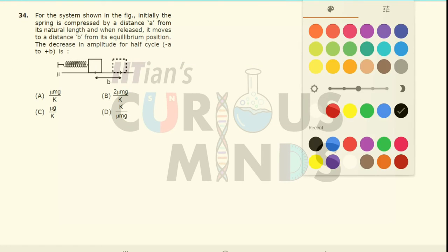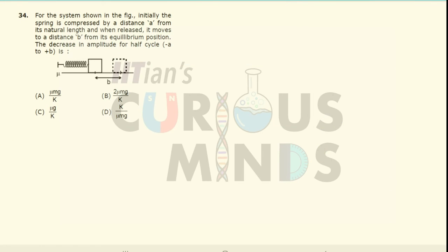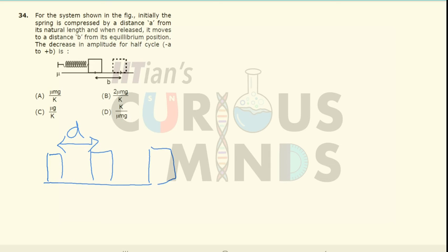For the system given here, initially the spring is compressed by a distance 'a'. This was the equilibrium position — it has been compressed by distance 'a' from its natural length. When released, it moves to distance 'b' from the equilibrium position. We have to find out what will be its decrease in amplitude for half a cycle.